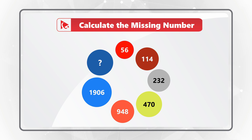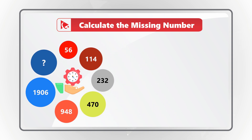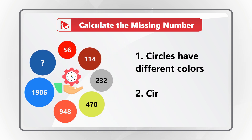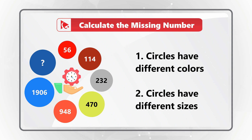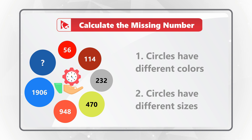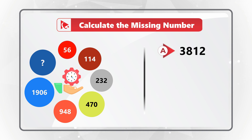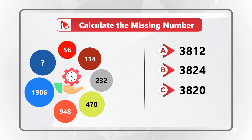Do you see the answer? Give yourself a little bit of time. What's interesting about this problem is that all circles have different colors, and some circles have the same size while others have different sizes. But regardless, you need to select one of the following four choices: Choice A, 3812; Choice B, 3824; Choice C, 3820; and Choice D, 3800.